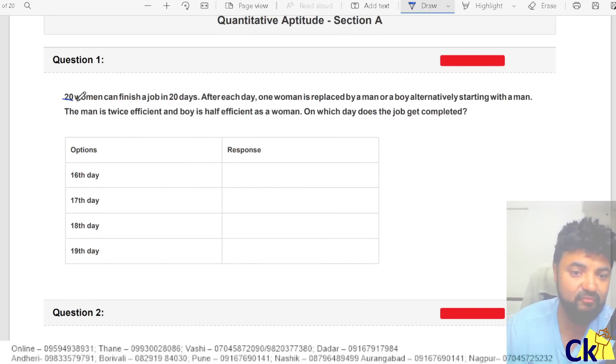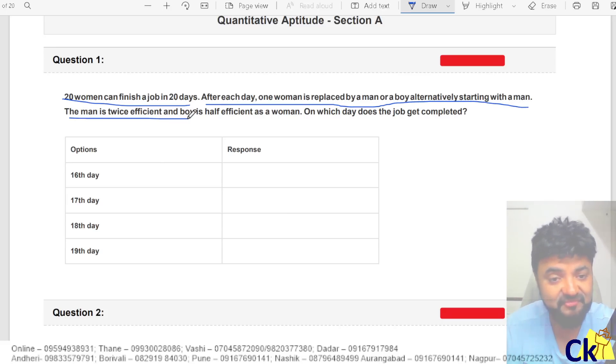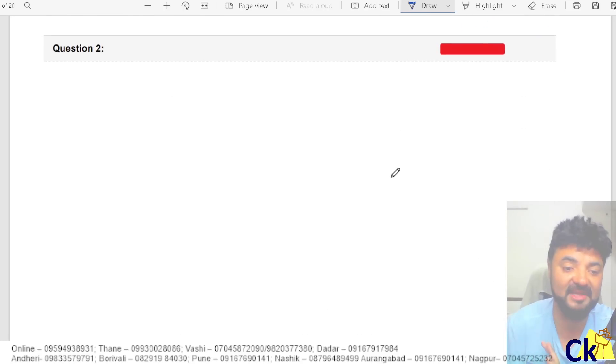20 women can do a job in 20 days. For each day one woman replaced by man for each day and a boy alternative starting with a man. Man is twice efficient and boy is half efficient as woman. How much time it will take to complete the job? This is a pure CAT level question for maths.